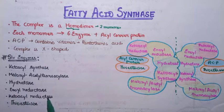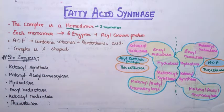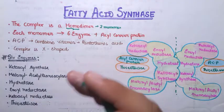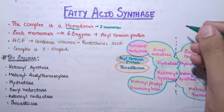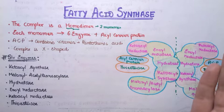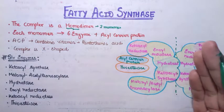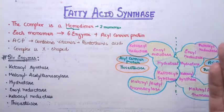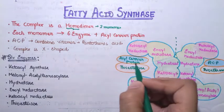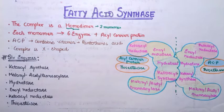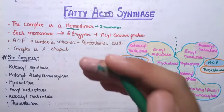The six enzymes involved are: ketoacyl synthase, malonyl acetyl transacylase, hydratase, enol reductase, ketoacyl reductase, and thioesterase. These six enzymes plus the acyl carrier protein make up the components of each monomer of the fatty acid synthase complex. A central line divides the whole fatty acid synthase dimer into two monomers, each consisting of six enzymes and an acyl carrier protein.